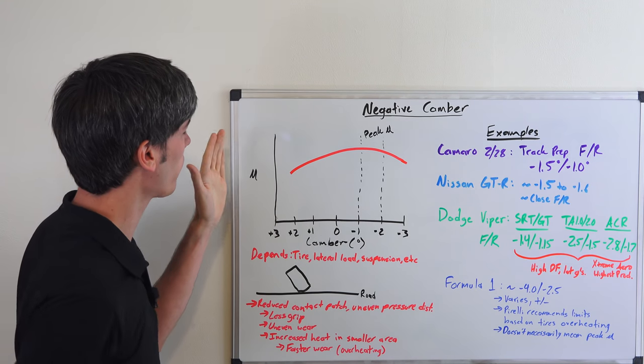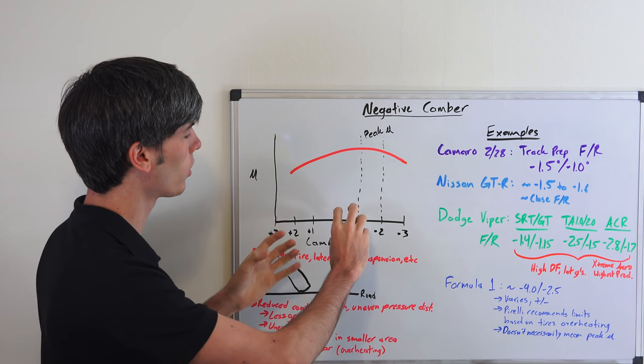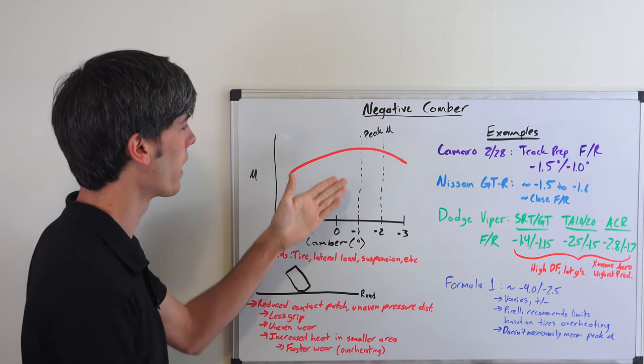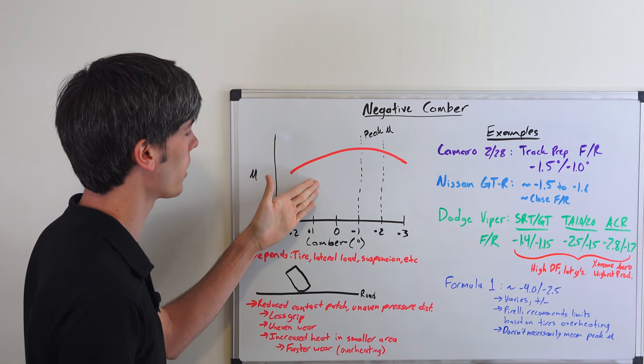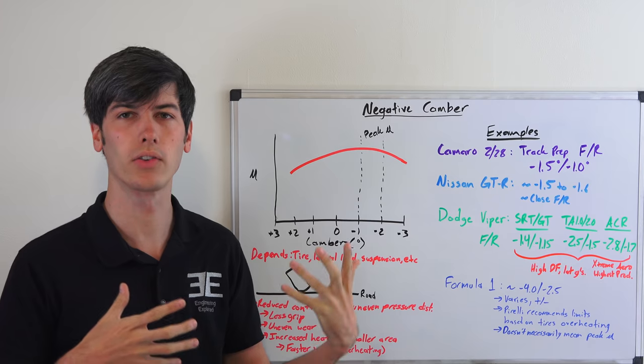Essentially you're going to be graphing your coefficient of friction against your camber angle, and somewhere around negative one to negative two degrees you may find your peak coefficient of friction. If you have less camber than that or more negative camber than that, you're going to start to lose performance as you won't be able to hold quite as high of lateral forces.